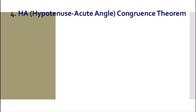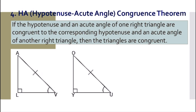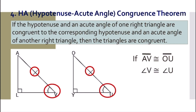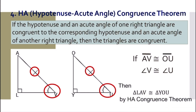For number four, we have the HA congruence theorem, or hypotenuse and acute angle. If the hypotenuse and an acute angle of one right triangle are congruent to the corresponding hypotenuse and an acute angle of another right triangle, then the triangles are congruent. For example, if line segment AV is congruent to line segment OU, our hypotenuse, and angle V is congruent to angle U, our given angle, then triangle LAV is congruent to triangle YOU by the HA congruence theorem.